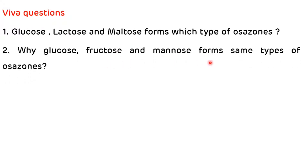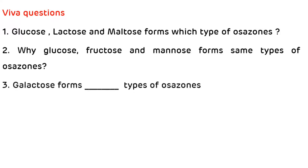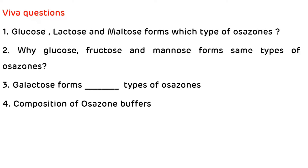Why do glucose, fructose, and mannose form the same type of osazone? Because the difference in their structures is in respect to the first two carbons, and this difference is masked by phenylhydrazine. Galactose forms broad front-shaped osazone. The osazone buffer contains sodium acetate, phenylhydrazine hydrochloride, and glacial acetic acid.